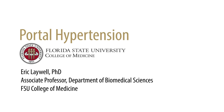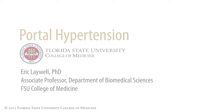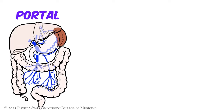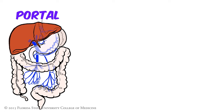Venous blood is returned to the heart by one of two systems: the portal system or the systemic system. The portal venous system drains blood from the spleen and all gastrointestinal organs between the distal esophagus and the rectum. This portal blood is directed by the portal vein to the liver, where it is filtered before being returned to the heart by the inferior vena cava.